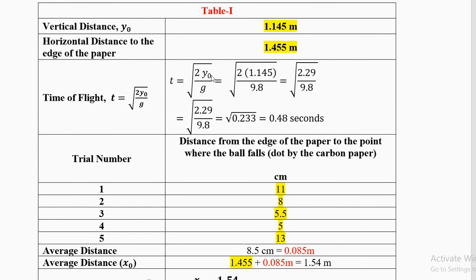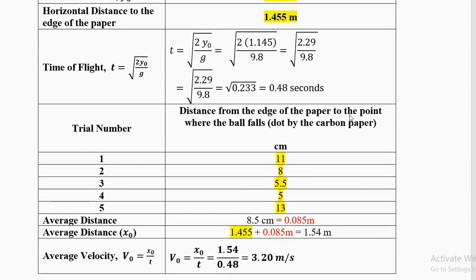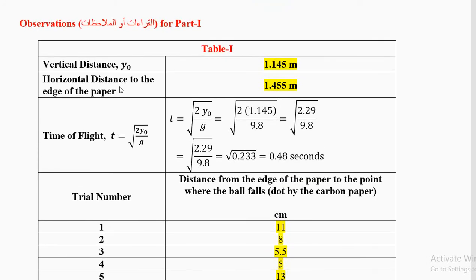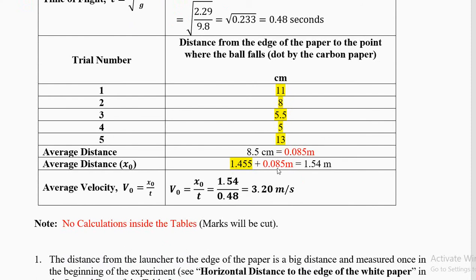Calculate time of flight: t = √(2y0/g). Two times 1.145 is 2.29, divided by 9.8 gives 0.2333. Take the square root and you get 0.48 seconds. The small distance is 0.085 meters. The distance from the edge of the paper is 1.455, so 1.455 + 0.085 = 1.54 meters — this is your average x0. The average velocity is 1.54 divided by 0.48 = 3.20 meters per second. Different students will get different speeds; that is okay.